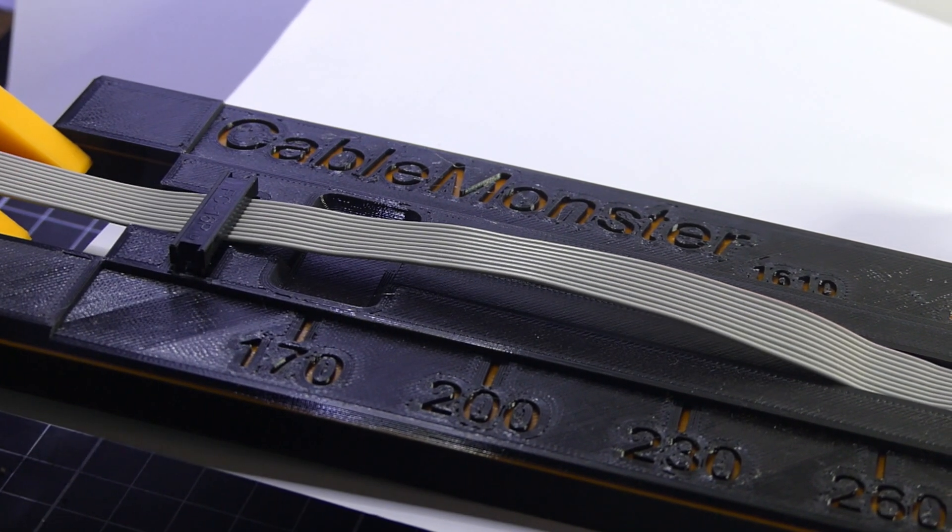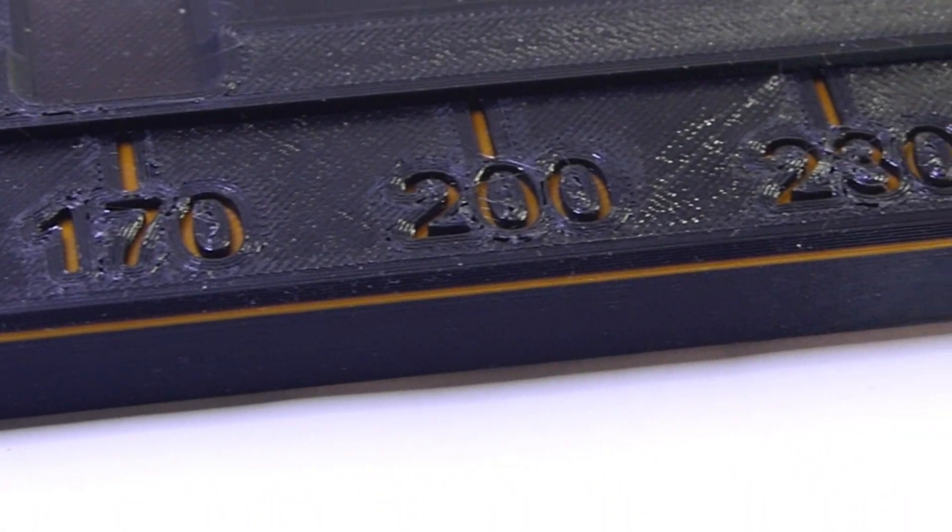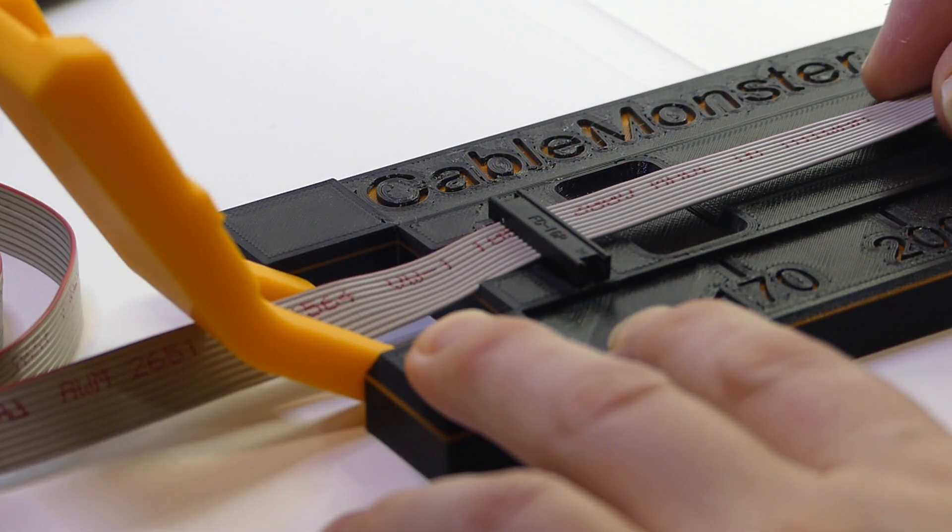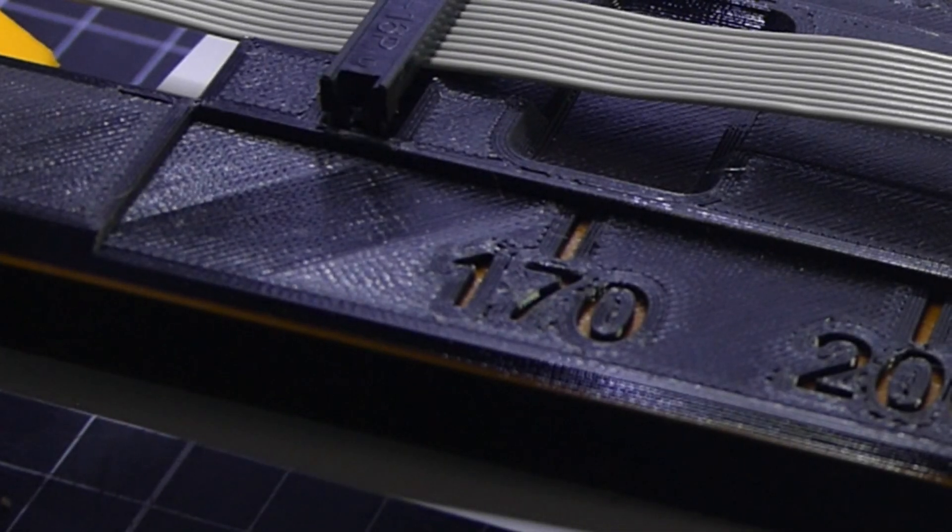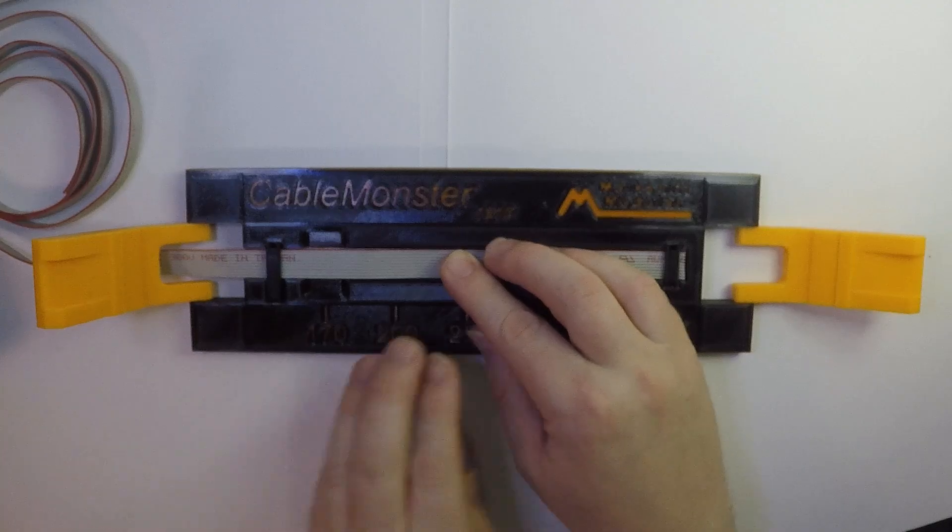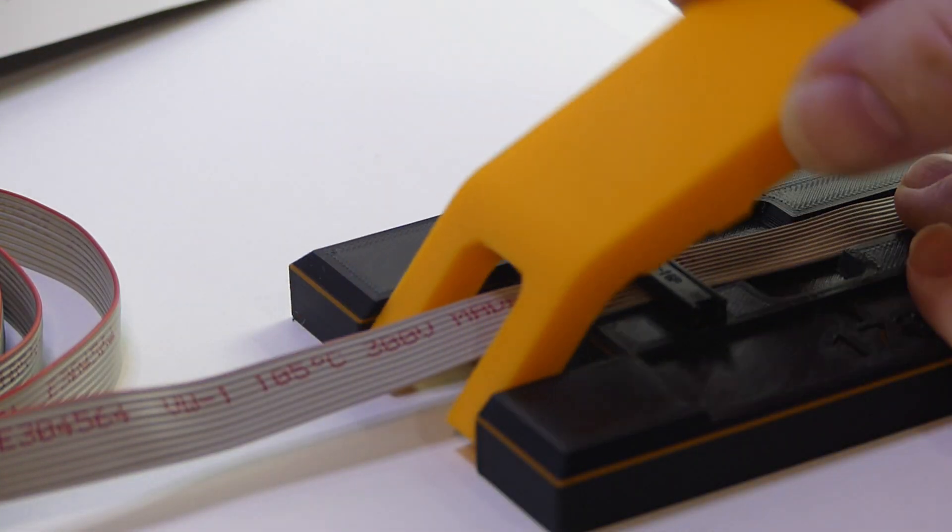To set the cable length, use the integrated ruler. Feed out more cable until you reach the desired length. But not in this case as we're making a standard cable of 170 millimeters. Now close the left lever and press down firmly.